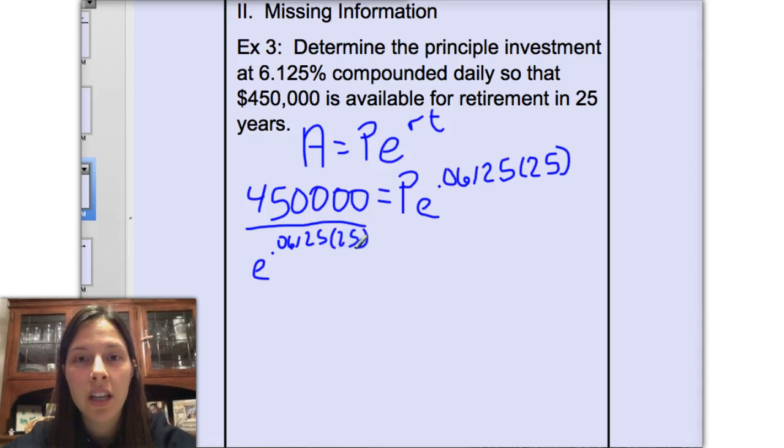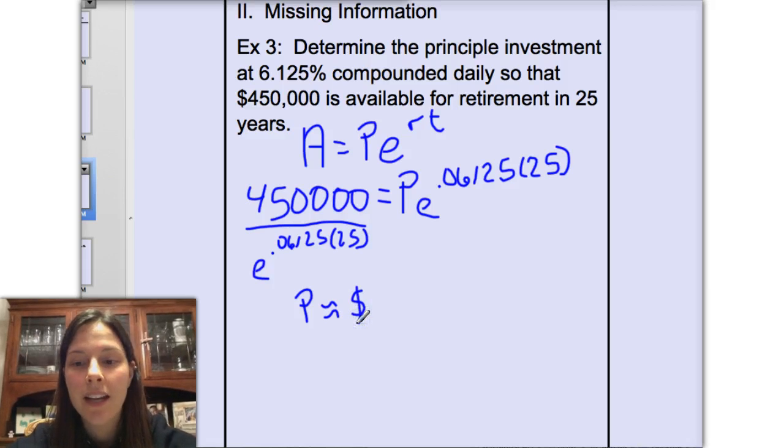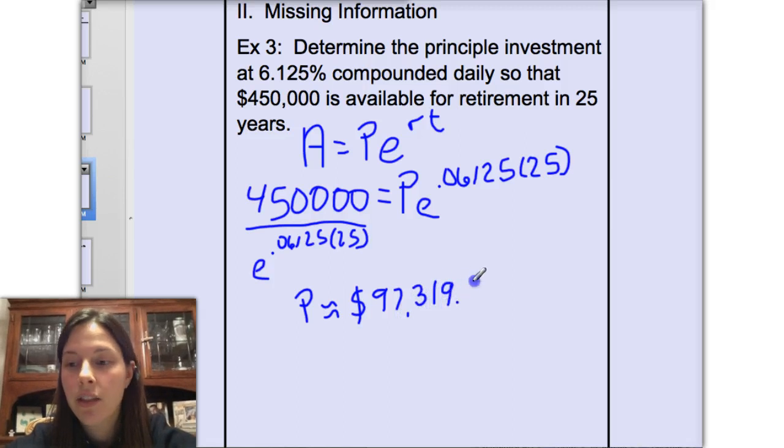When you punch this into your calculator to get the principal, you want to make sure that you either multiply the numbers in the exponent first, or put parentheses around them before you do e to the power of. So if your principal amount was not the same as mine, you did something wrong with the order of operations. I got $97,319.33.